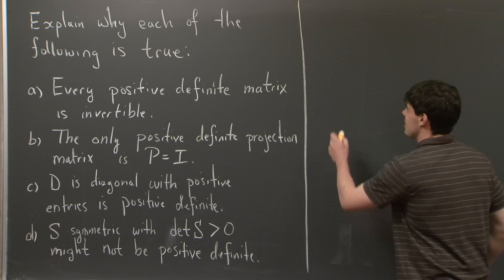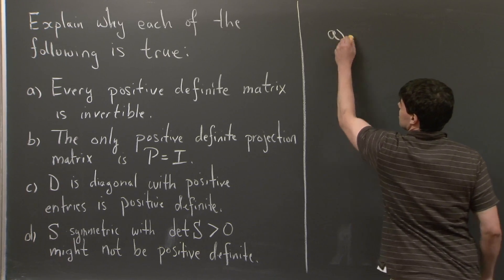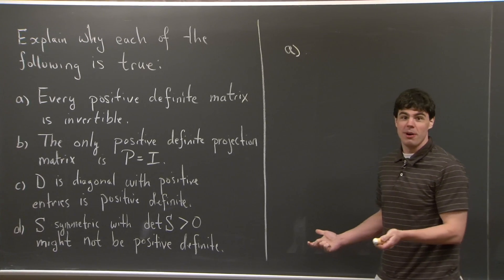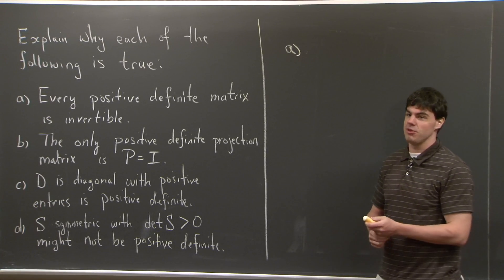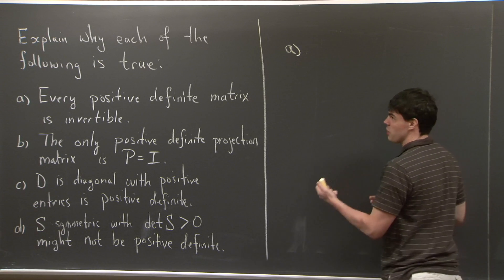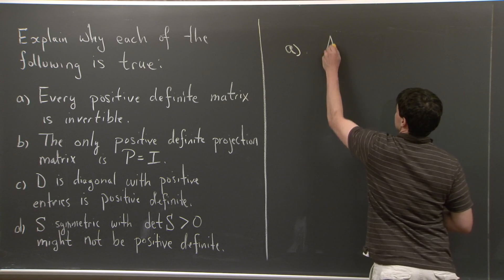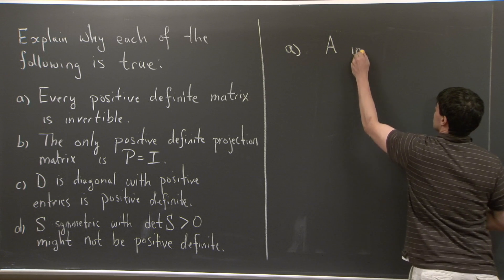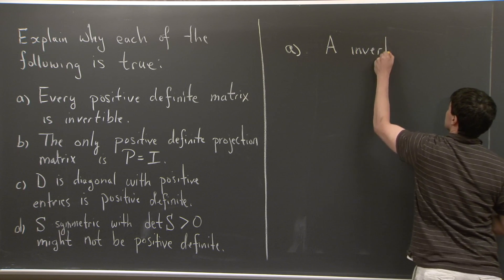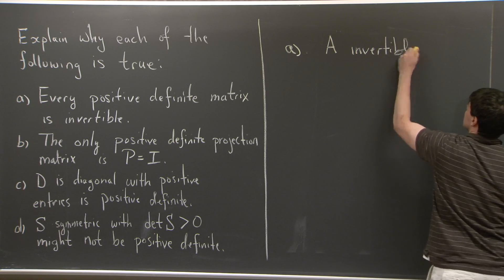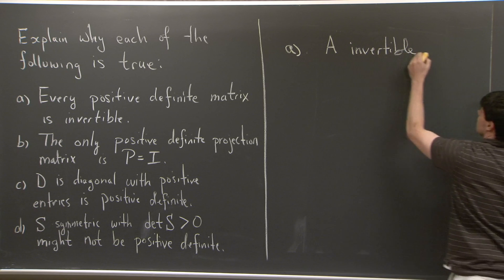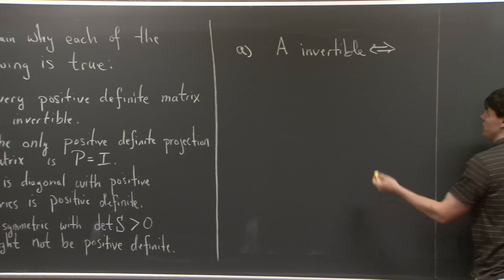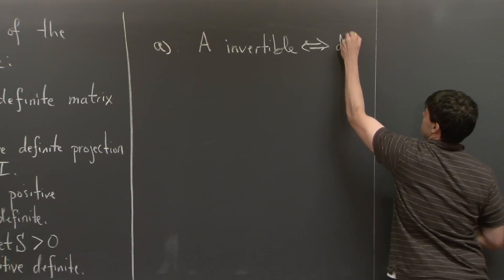Let's take a look at part A. Part A is asking why every positive definite matrix is invertible. Let's recall that if A is a matrix and A is invertible, then this necessarily implies that the determinant of A is non-zero.